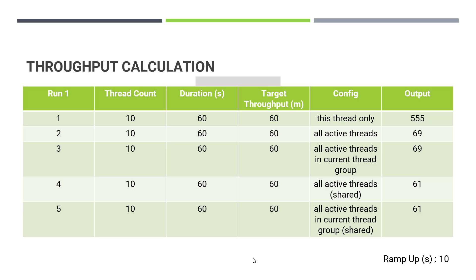The total would be around 600. Since we have the ramp-up of 10 seconds, this ramp-up will have an influence. That is why we are achieving around 555 samples in a minute.